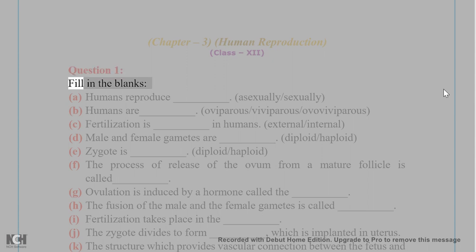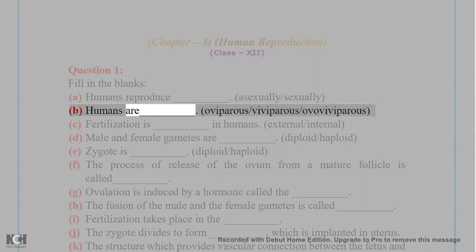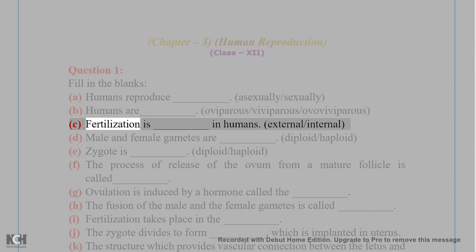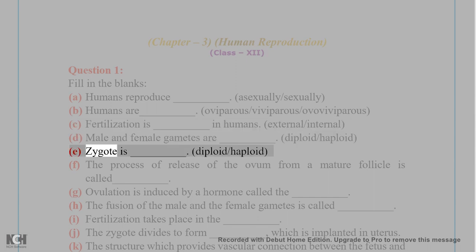Question 1: Fill in the blanks. A. Humans reproduce sexually. B. Humans are... C. Fertilization is... D. Male and female gametes are... E. Zygote is...